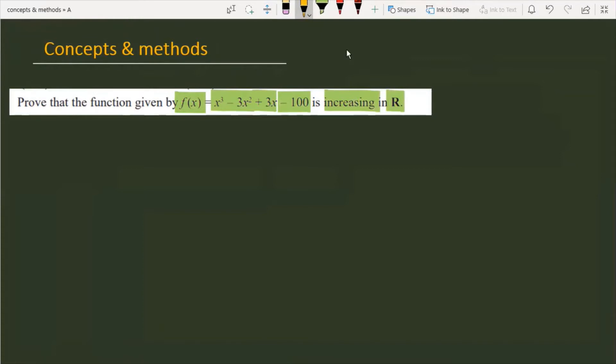If you have a polynomial function and you have to prove that the function is increasing, it will be sufficient if we prove that f'(x) is greater than or equal to 0.